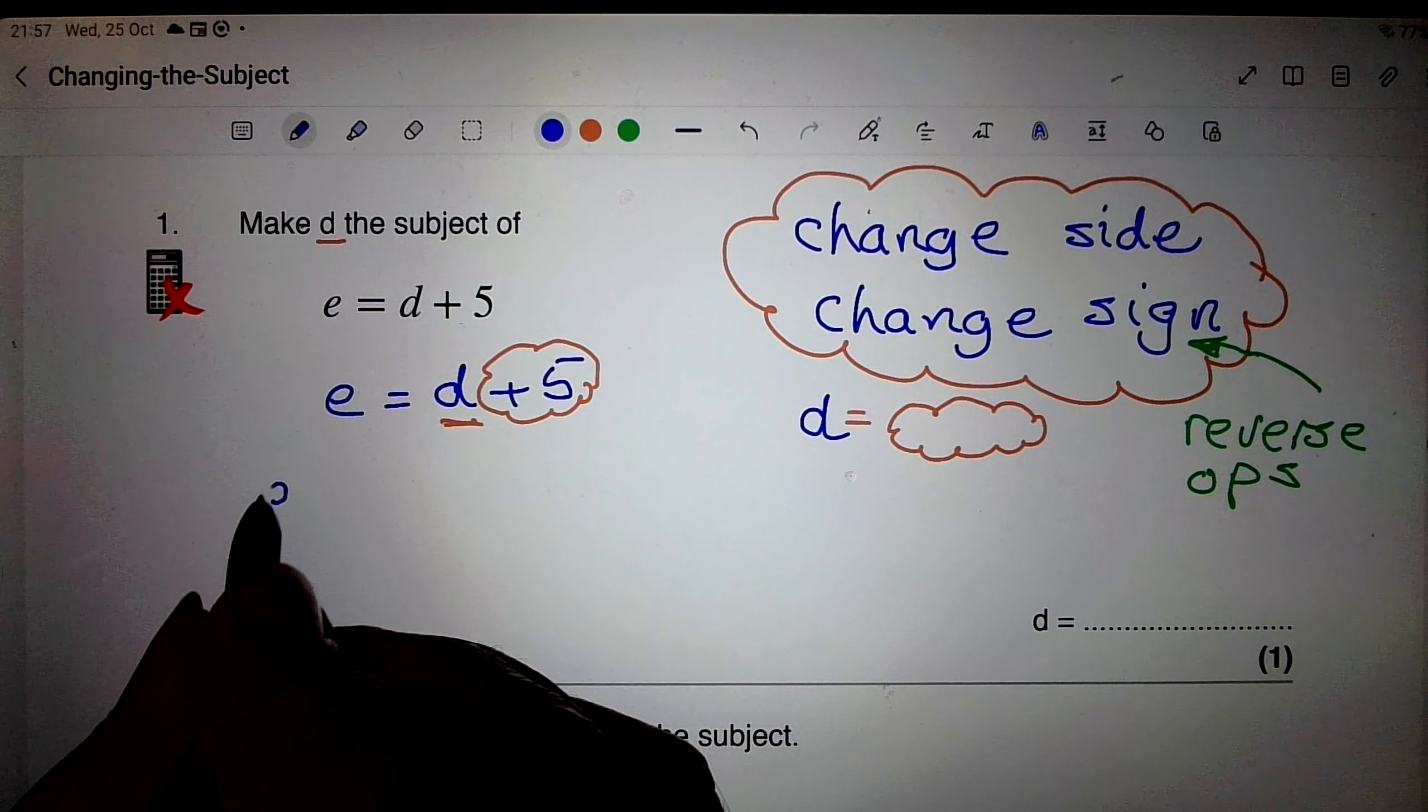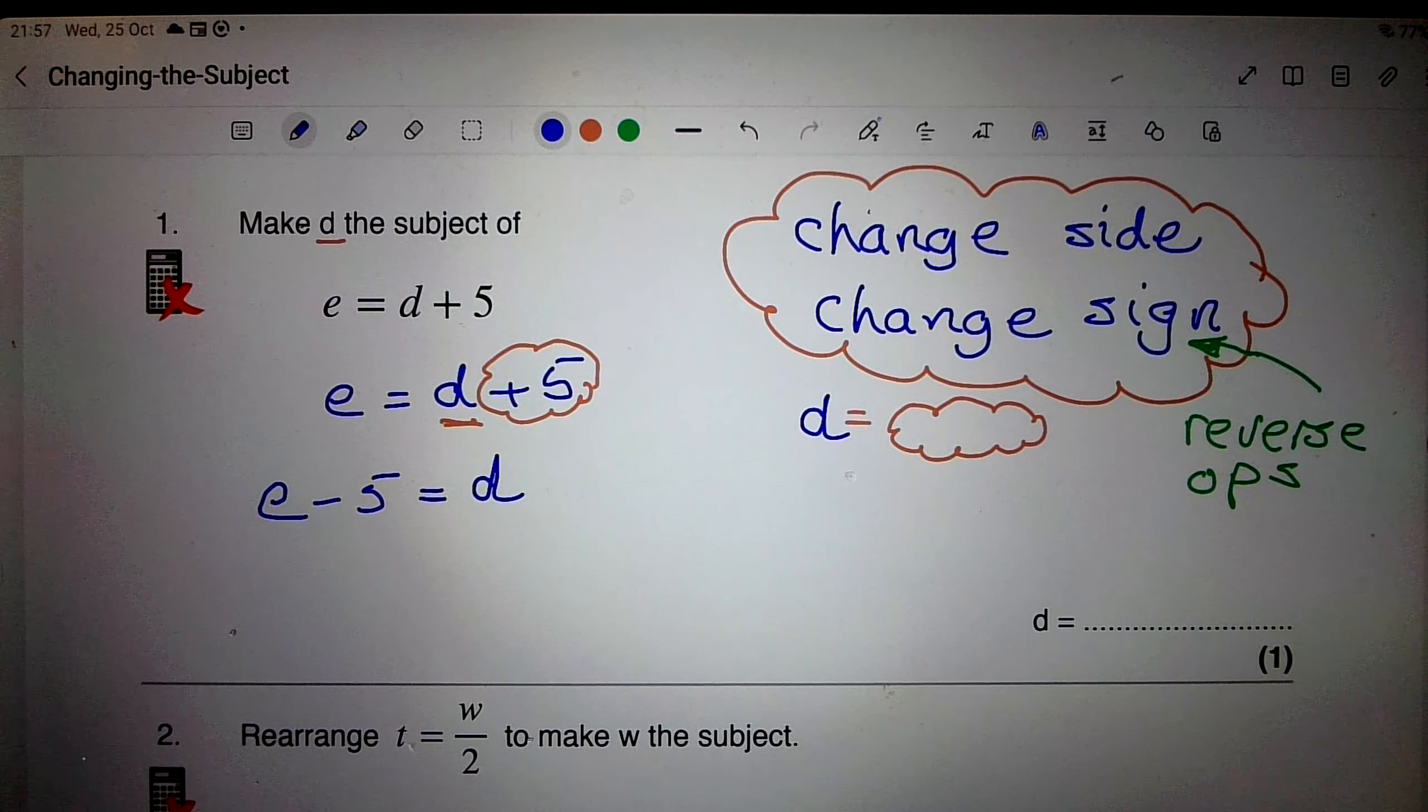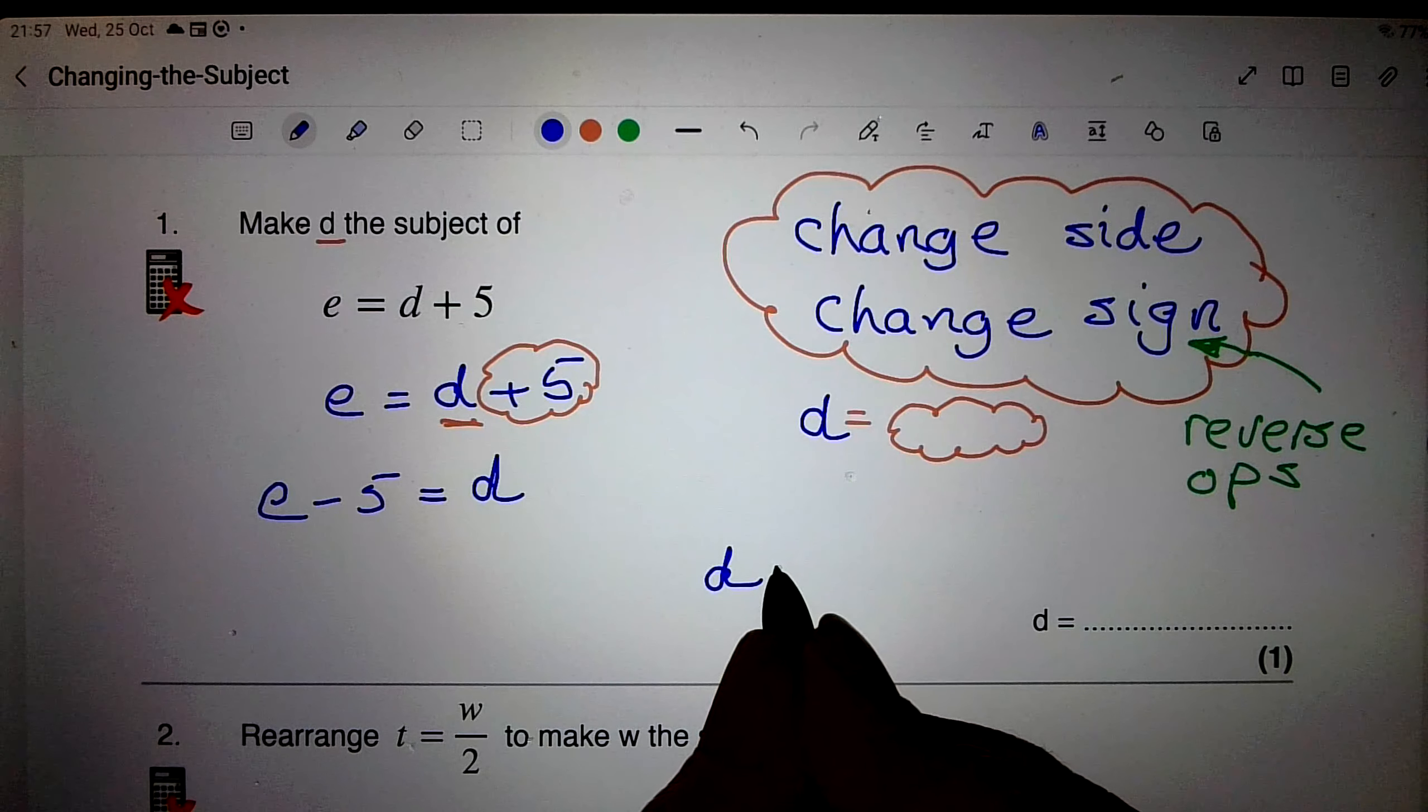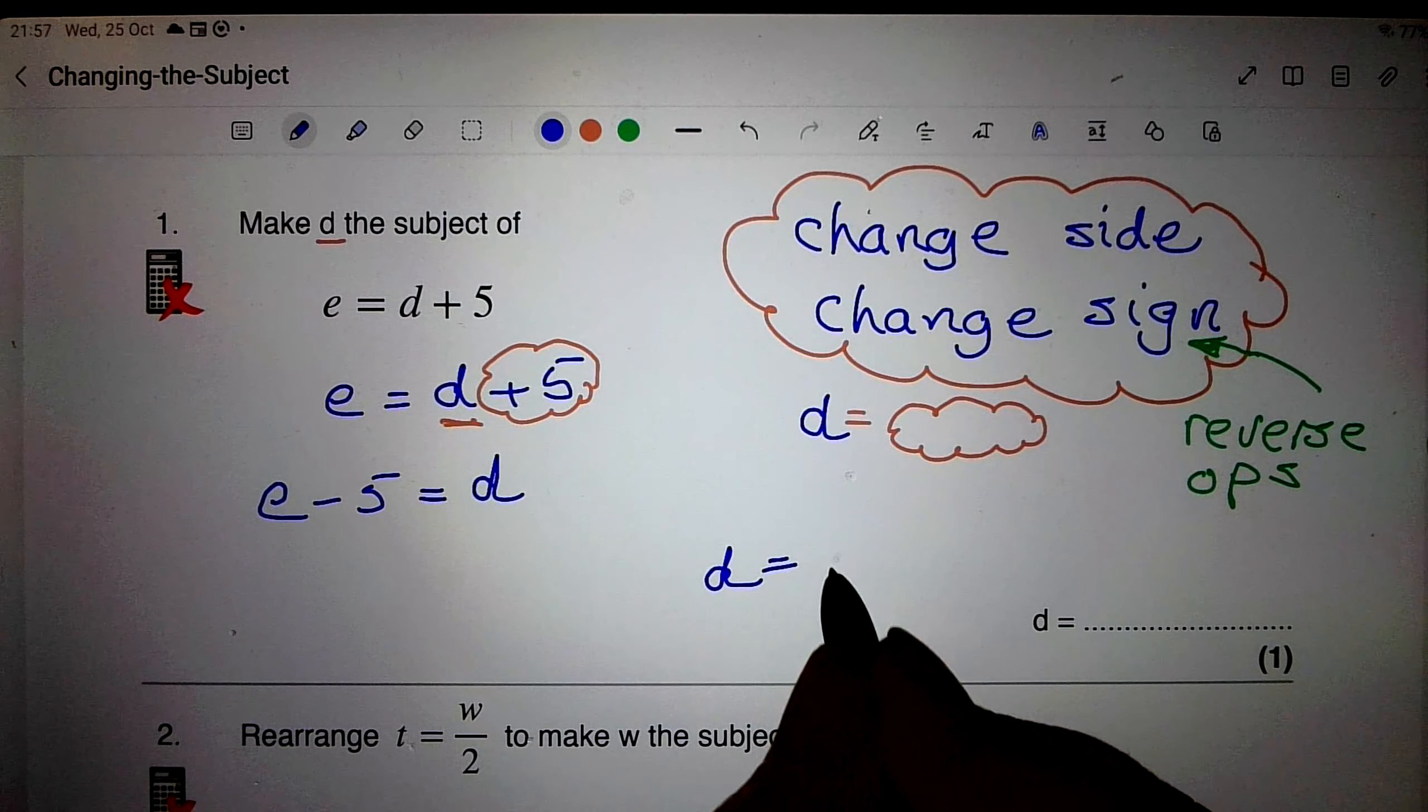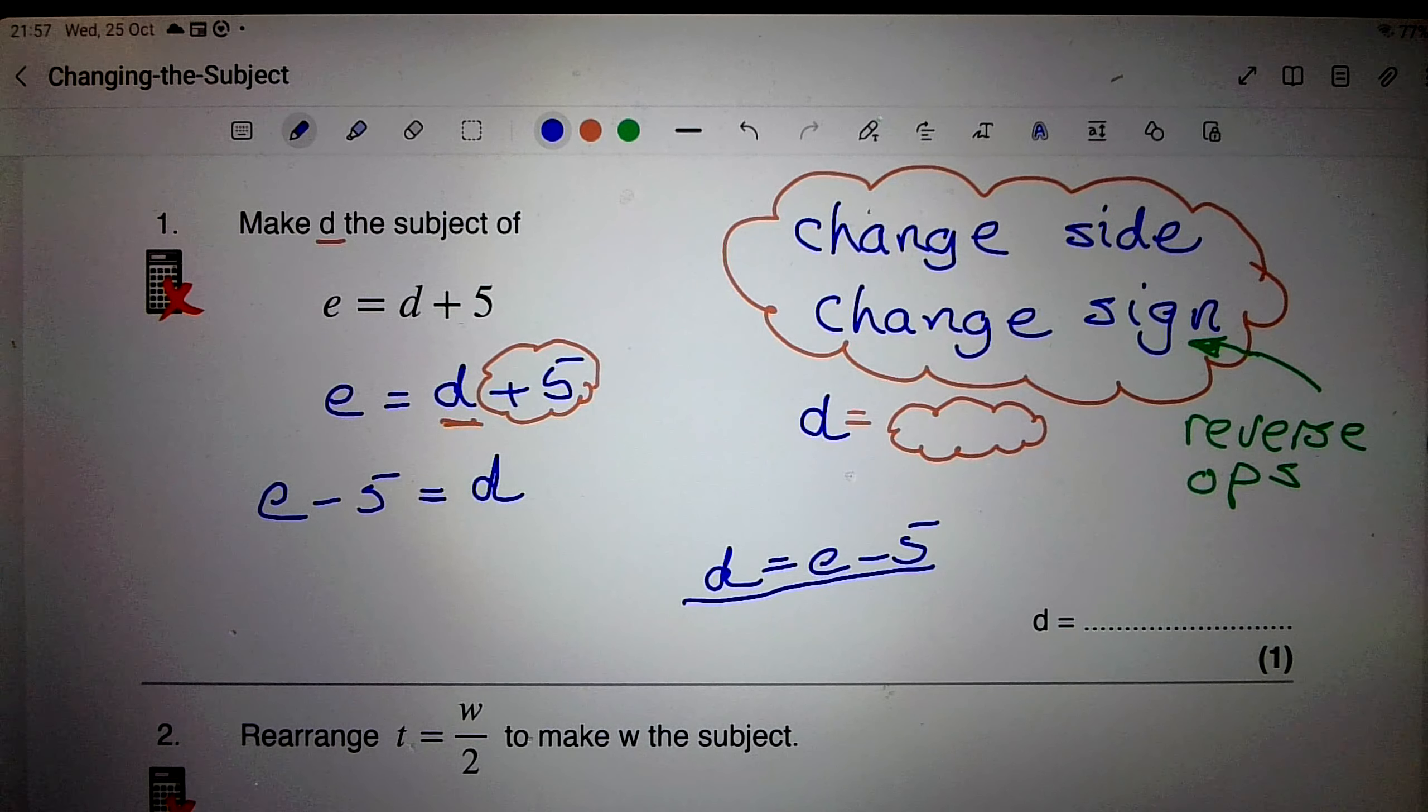So when I write this out again, I'm going to have e minus 5 equals d. But I cannot leave it like that because I want to finish up with d on the left hand side. So I'm going to put d equals e minus 5, and there's my final answer.